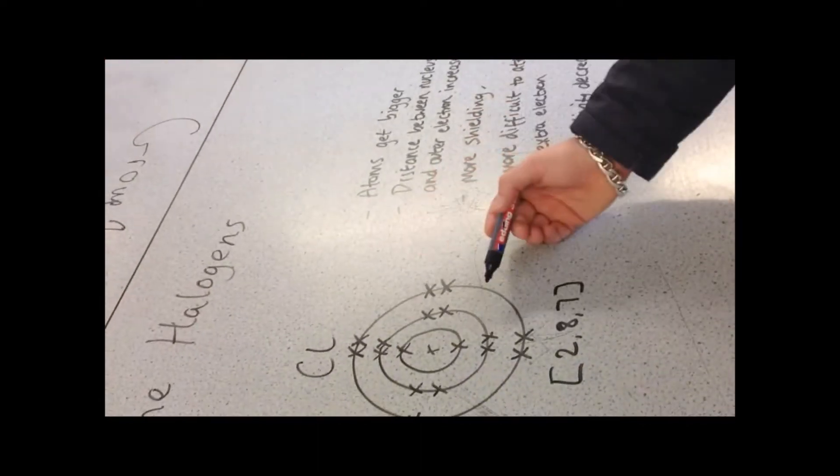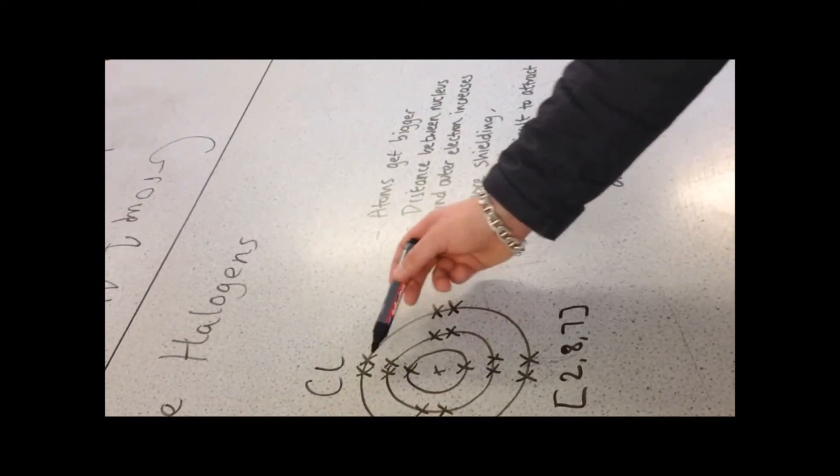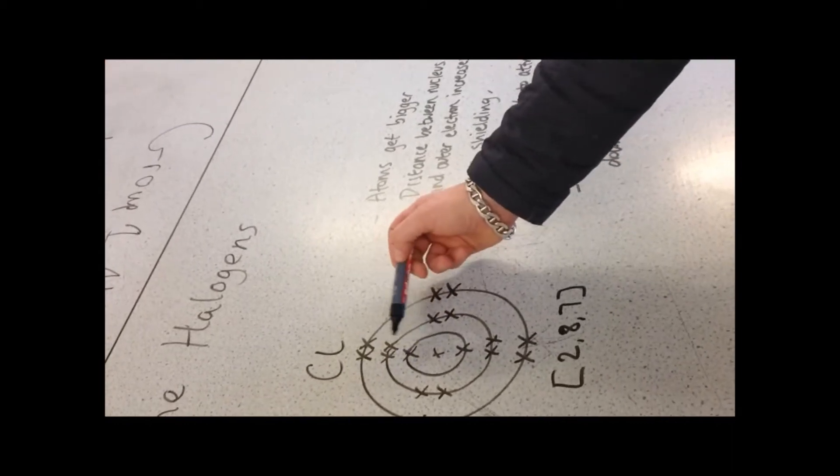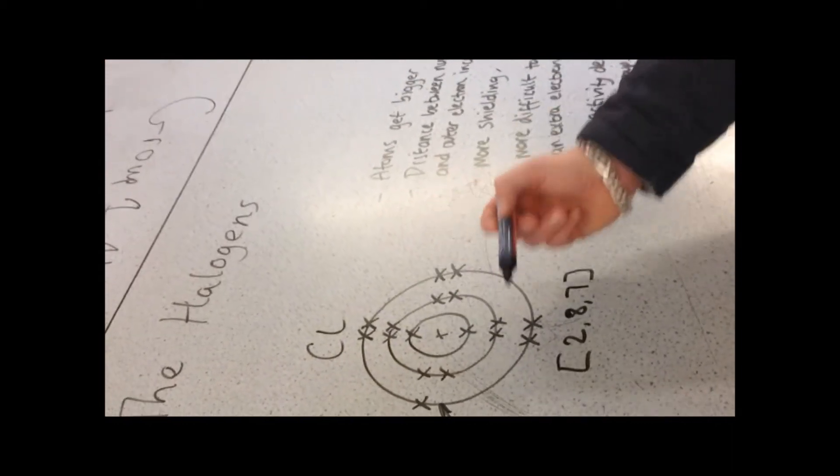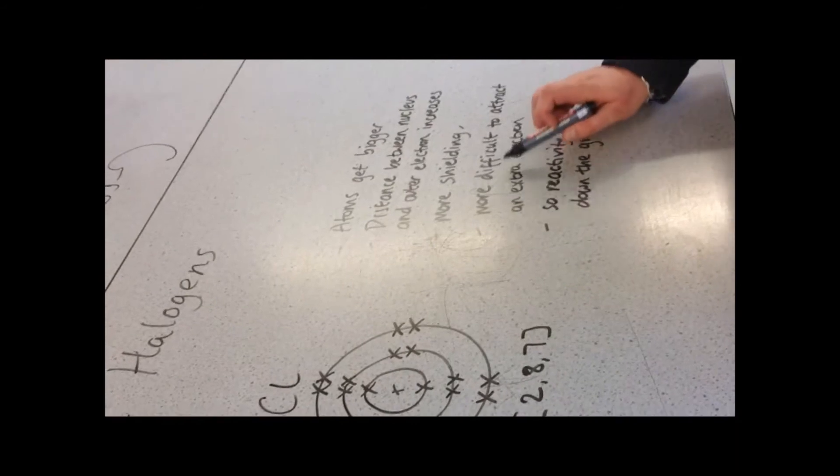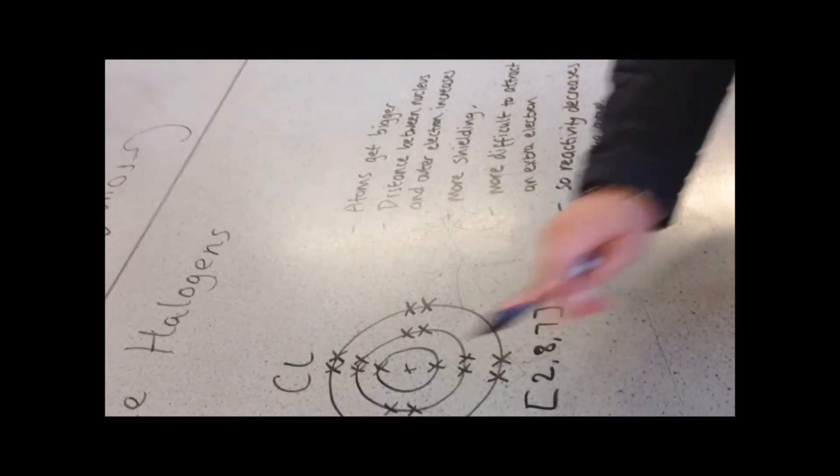So if there is more shielding, remember that's the distance between the outer electron and the positive nucleus, more shielding means it's more difficult to attract that extra electron.